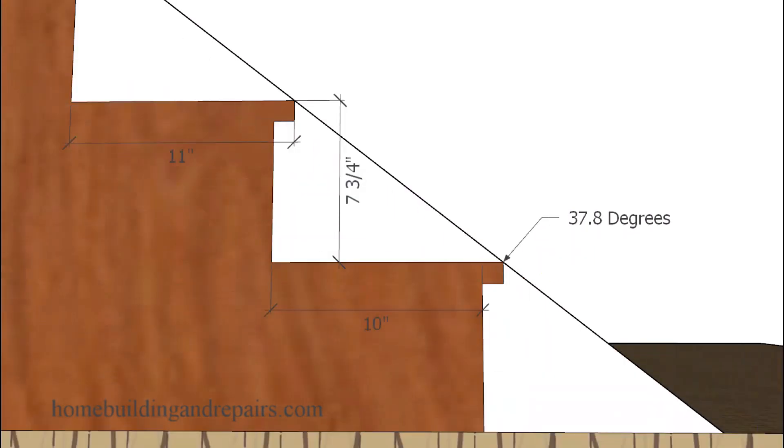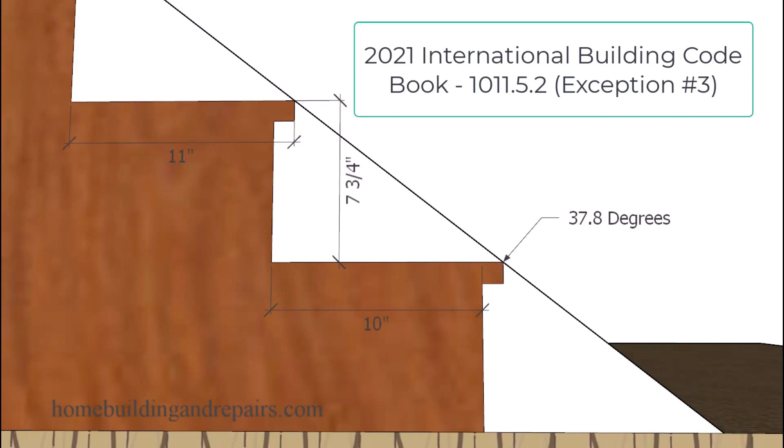Now here's another building code you're going to need to familiarize yourself with. It will have the same 37.8 degree angle as our first example, because we're still going to have a seven and three quarter inch riser height and a 10 inch tread depth. The only difference here is that we're going to have a one inch nosing or tread overhang.